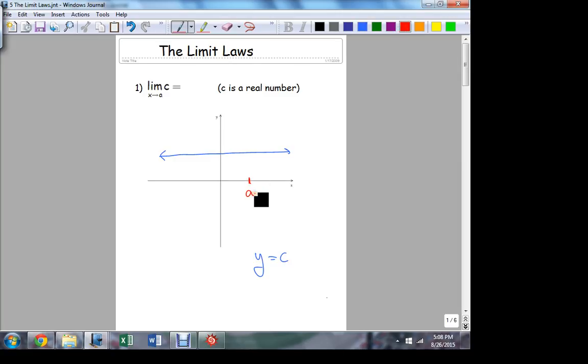So here's my limit point right here. I'm approaching a from the right-hand side. I'm approaching a from the left-hand side. What's happening to the function values? What's the function value equal to at each one of these points? It's never changing. No matter where I am on the x-axis, the value of the function is always the same. Doesn't matter whether I'm far away, close to it, getting closer, getting further. It never changes. So what's the value of the limit? C.